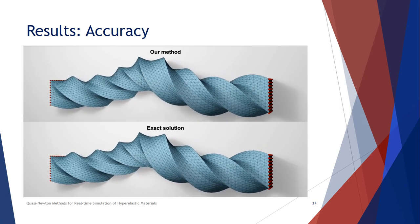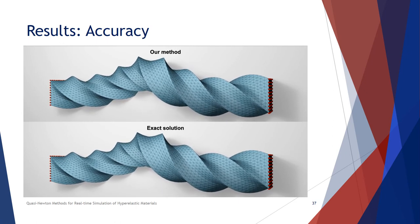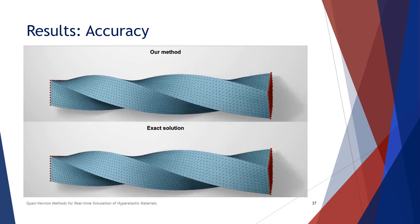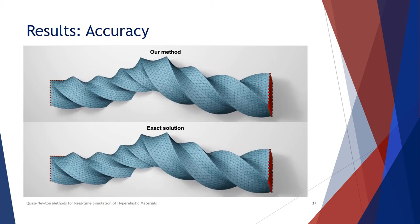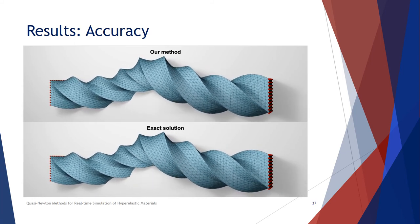Let me show more results using the remaining time. Our method is accurate. In this twisting bar simulation, we run 10 iterations of our method, and it already looks indistinguishable compared to the exact solution simulated using converged Newton's method on the bottom.